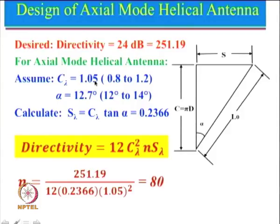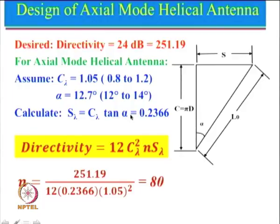C_lambda was taken as 1.05 — I normally take this as 1 — and alpha was taken as 12.7 degrees, which is between 12 to 14 degrees. I generally take this to be 13 degrees for my design, but this example has been given in the Kraus book. Once we have assumed these two parameters, we can calculate the value of S_lambda using the expression: tan(alpha) = S divided by C. So we can calculate S_lambda. We know the expression for directivity, and since directivity is known, C_lambda has been assumed, and S_lambda has been calculated, we can find the value of n by substituting all these values, which comes out to be 80.